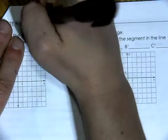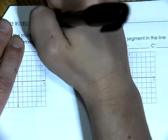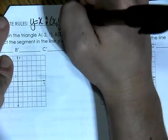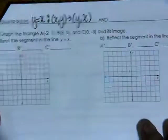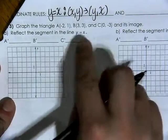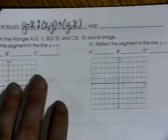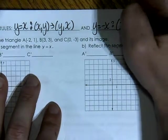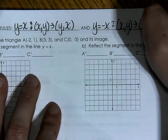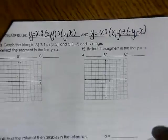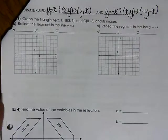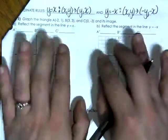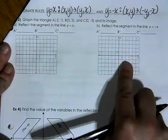Let's talk about the coordinate rules once again. For the line y equals x, the rule is (x, y) changes into (y, x) — you simply switch the x and y values. For the line y equals negative x, the rule is (x, y) changes into (negative y, negative x), or the opposite of y and the opposite of x. Please graph triangle A, B, C on both grids before we start this problem.